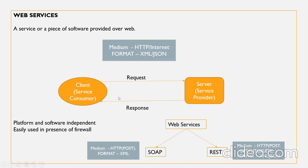In order to enable communication, we need two things: the medium and the format. For example, consider a phone call — to enable communication you need a phone, which is the medium, and a language understood by both callers, which is the format. Similarly, for web services to communicate, they need HTTP or the internet as the medium, and XML or JSON as the format.